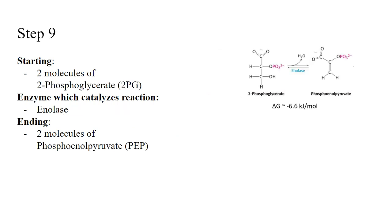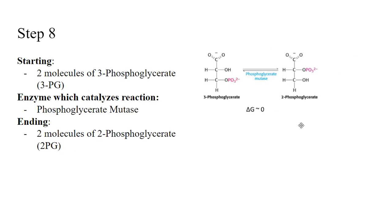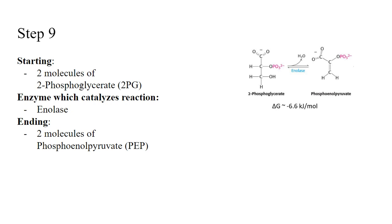In step nine, the two molecules of 2-phosphoglycerate (2-PG) are catalyzed by an enolase enzyme and converted into two molecules of phosphoenolpyruvate, also known as PEP. The delta G is slightly negative, so the reaction is more favorable going forward. This step is essentially prepping for the final step to make pyruvate — at this stage, PEP still has a phosphate group attached.